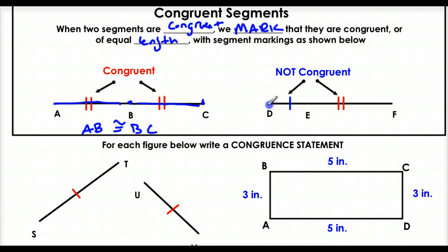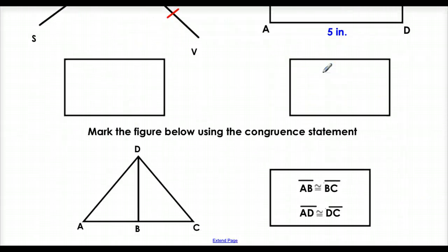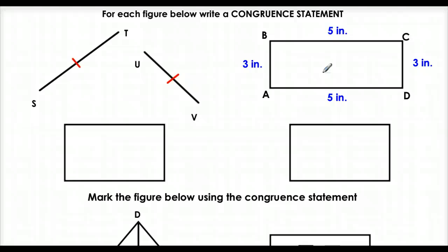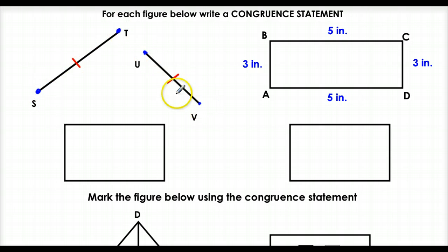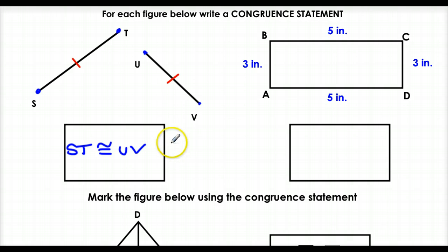Now, if you look at this example, these segments have marks but they're not congruent — this one has one mark and this one has two, so these aren't congruent. If you look at it, this segment is much smaller than the other. So here we're going to start writing congruent statements — basically stating when two things are of equal size. In this example, ST and UV are congruent because they have the same marks, so the statement would be: ST is congruent to UV. That tells me they're the same length.